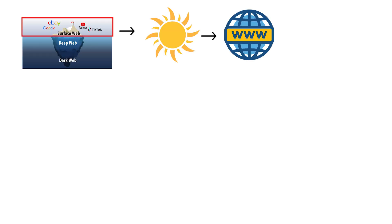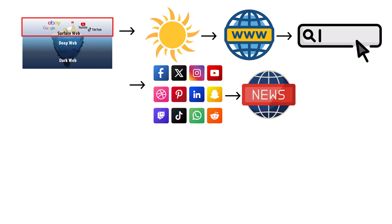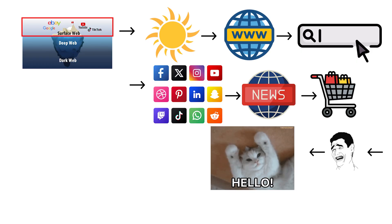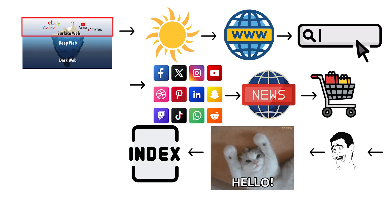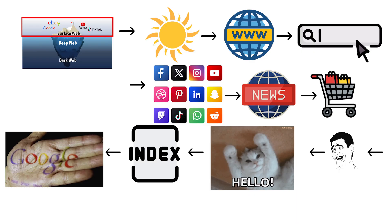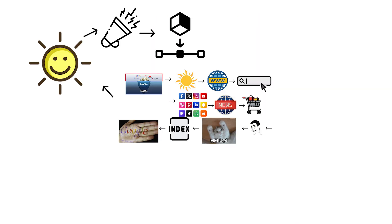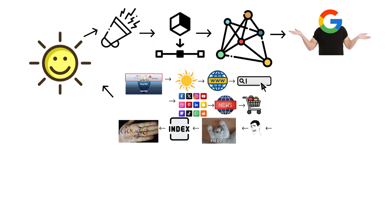It's the sunlight of the internet — search engines, social media, news, shopping carts, memes, and cat videos. Everything here is indexed, meaning it shows up on Google.